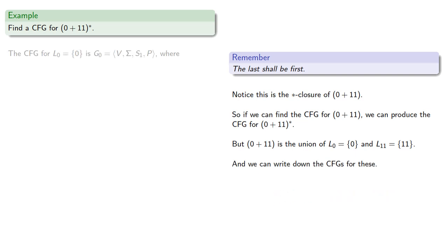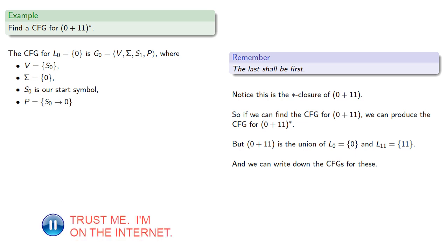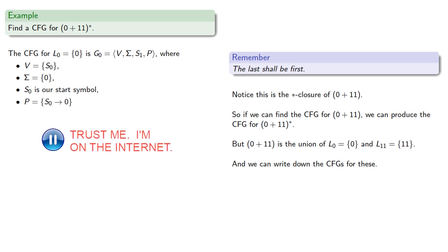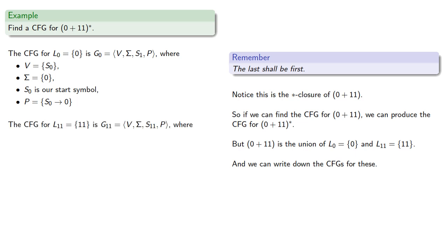The context-free grammar for the language consisting of just the symbol 0 is going to have variables — just the start symbol — terminal symbols — just 0 — our start symbol S₀, and the production rule S₀ → 0. Likewise, the context-free grammar for the language consisting of just the element 1 — note that should be viewed as a single symbol, not a string — is going to be similar.